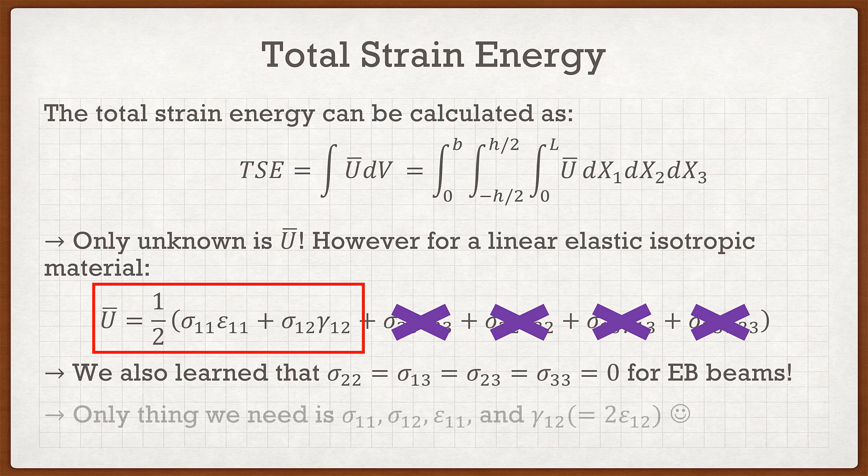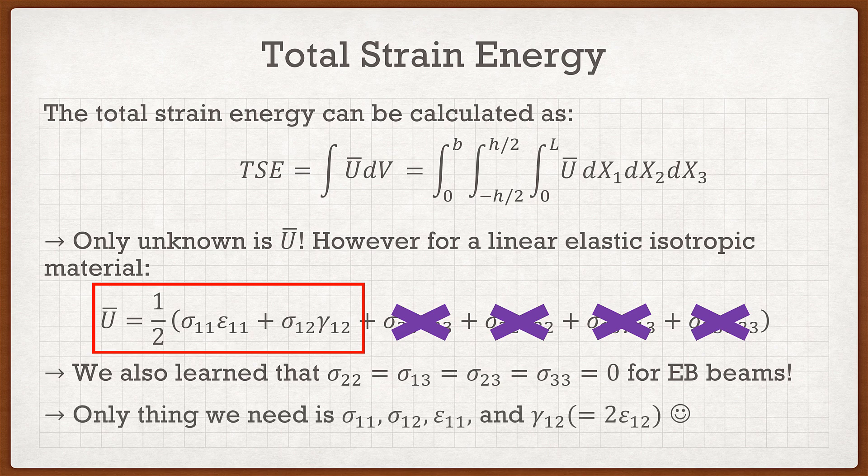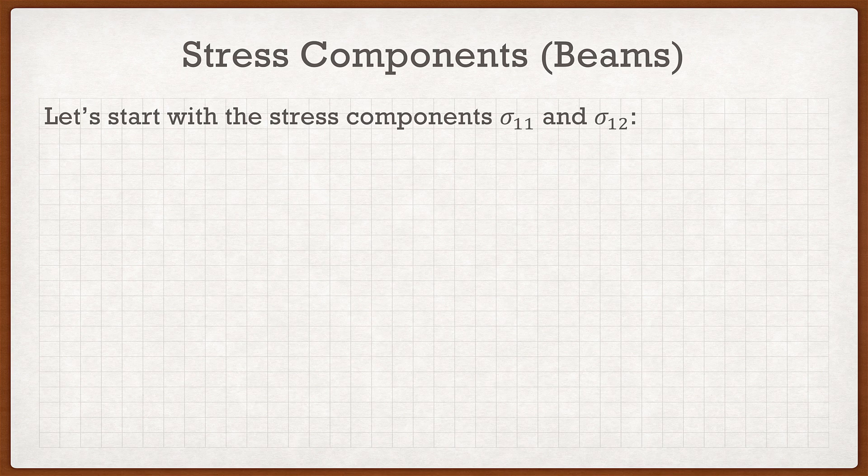At this point we only need four components to solve for the strain energy density function: two stress components and two strain components. Once we have this function, all we need to do is integrate it three times — and since you'll be using Mathematica, the integration will be straightforward. The hardest part is getting the strain energy density. We need stress components sigma11 and sigma12.